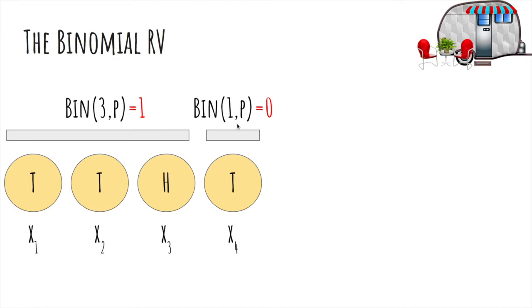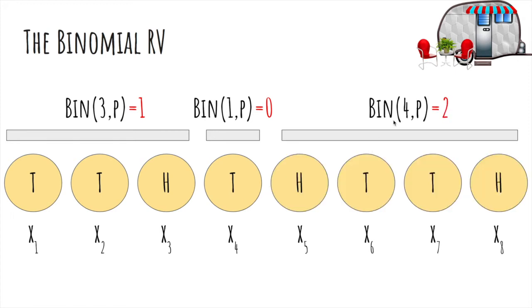Binomial 1p is the number of heads in one coin flip, which is the same as just Bernoulli p, actually, and it's 0 because this is a tail. Here the number of heads in four flips, it happened to be 2 here.